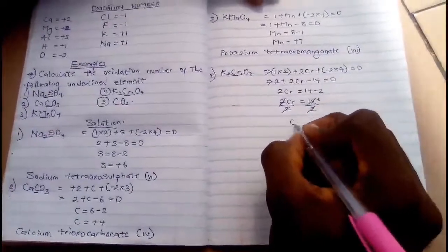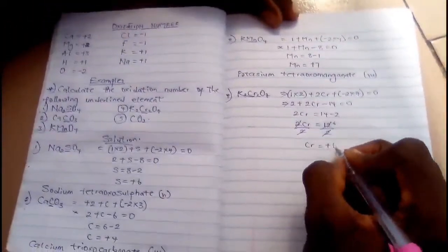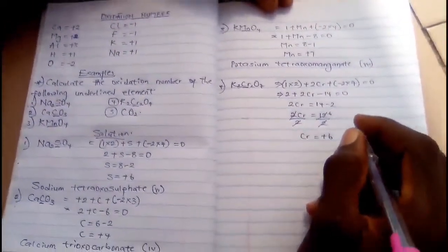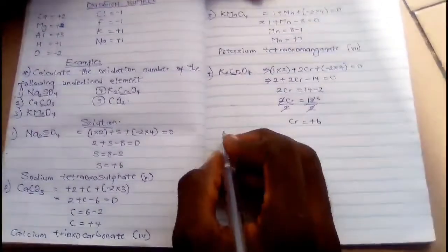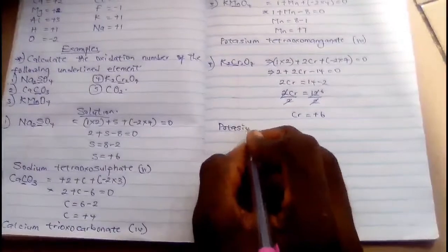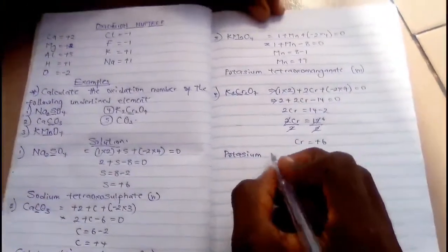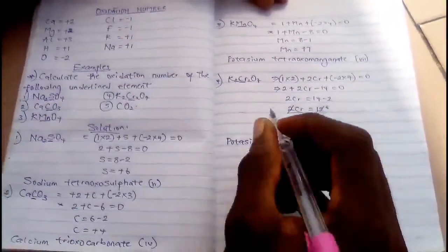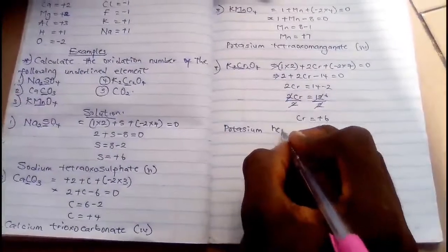So 2Cr will give you +12. Divide both sides by 2. After dividing, you notice that it will give you Cr = +6. Then the IUPAC nomenclature for this compound is potassium hepta-